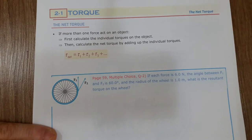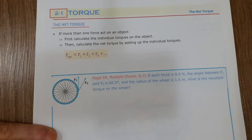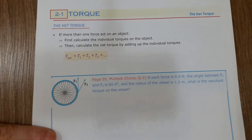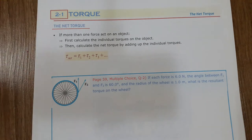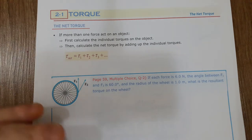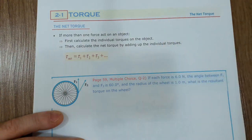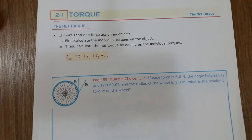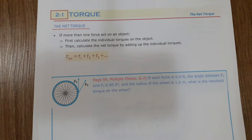If there is only one force acting on an object, calculating torque is easy — just calculate F times D times sine theta, so you find the magnitude. If the rotation is clockwise, torque is negative; if rotation is counterclockwise, torque is positive.